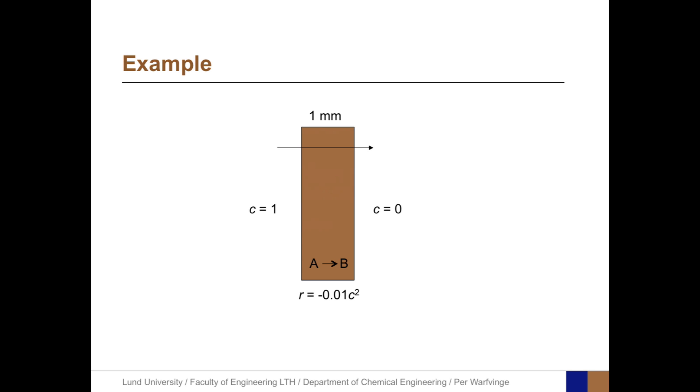The example is some kind of slab through which a substance may diffuse at the same time as it reacts. So the geometry is one-dimensional, it's one millimeter across, and there's a chemical reaction where A is consumed according to a second-order reaction.